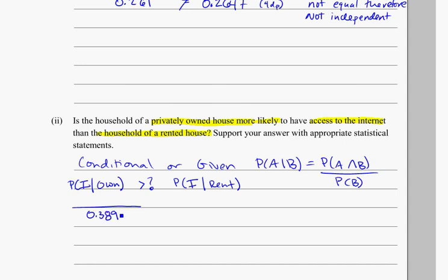Now, out of that group of people, the probability that they have internet, we saw was 0.261. And that, I'll write it below, that's going to be equal to 0.6558.